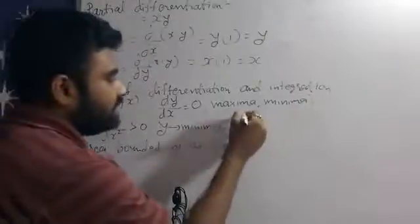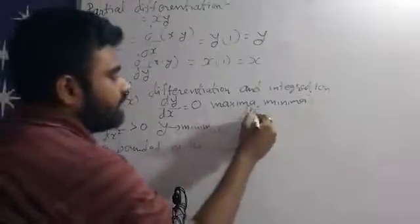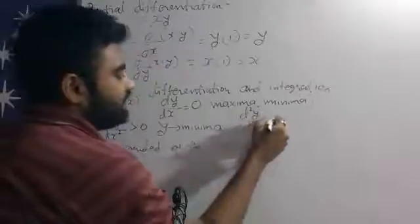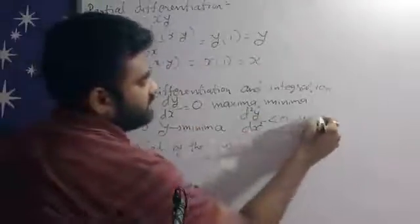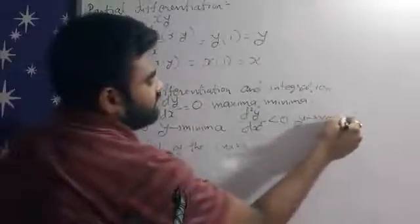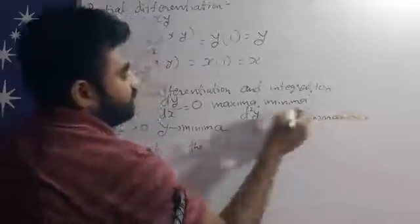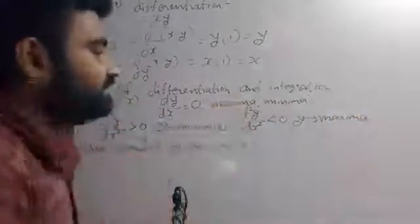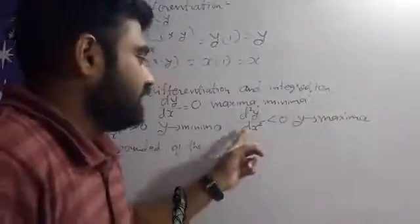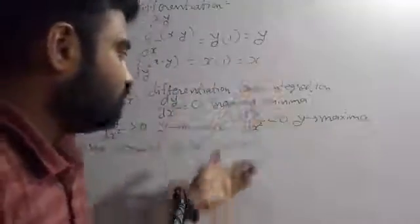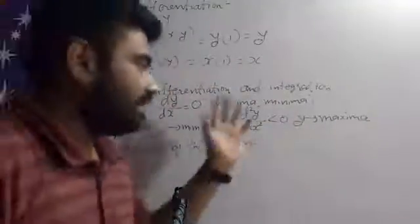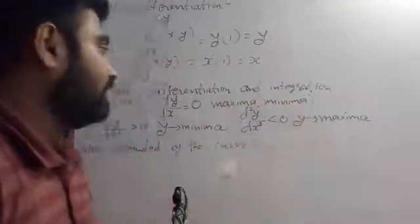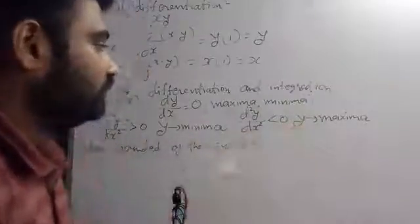Similarly, if d²y upon dx² is less than 0, then we get Y as the maxima, because whenever the second differential equation is smaller than 0, Y will be in the maxima part. So this is how differentiation works.